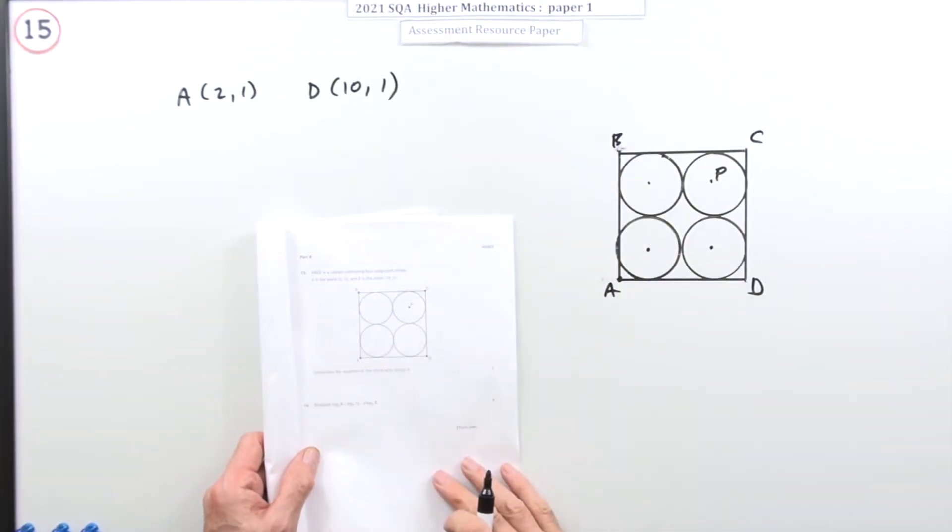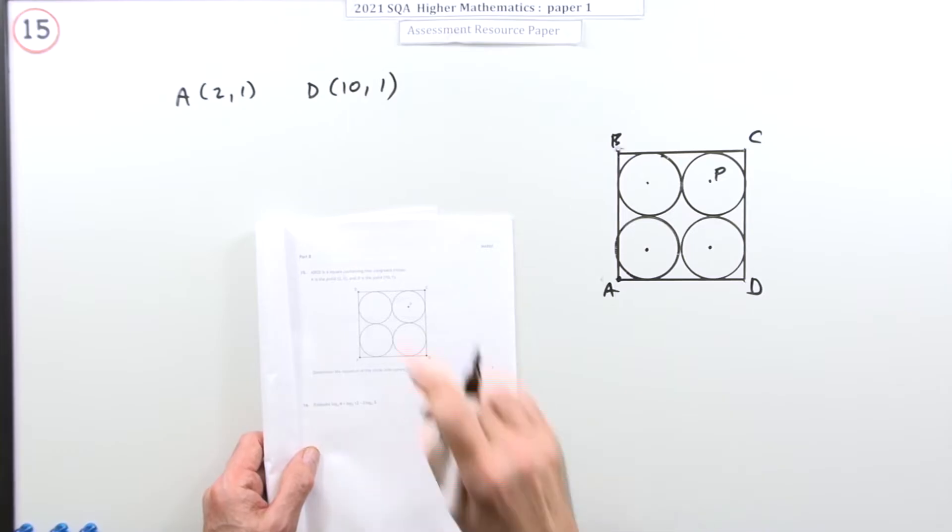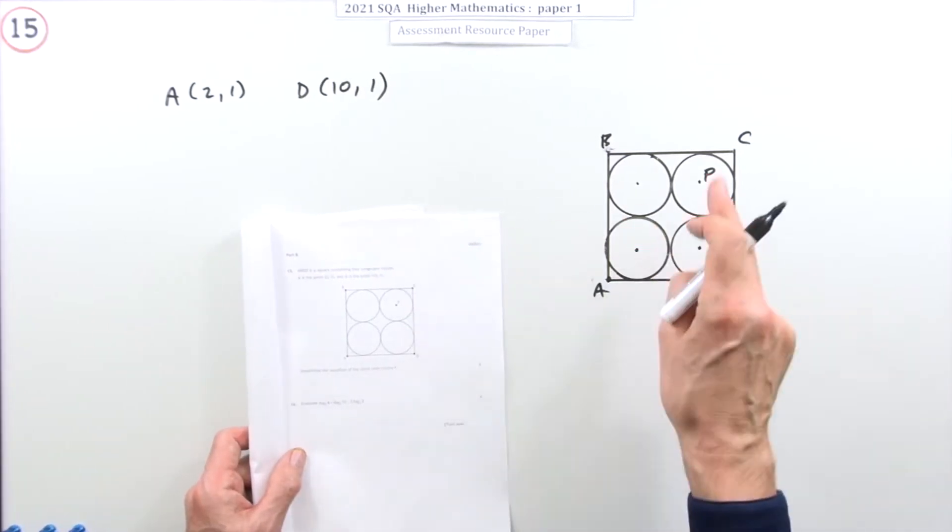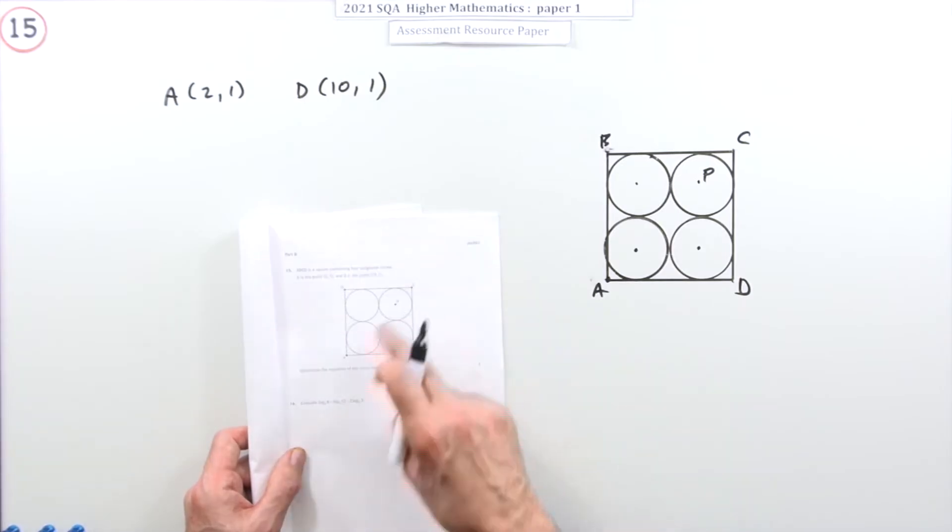Question 15 from Paper 1 of the 2021 Higher Maths Resource Paper, section B, part B. The parts with circles and logs. It starts with circles, just a little three-mark question. A straightforward one because it's only Paper 1 after all.